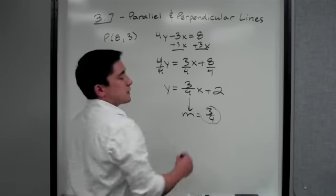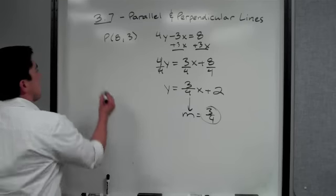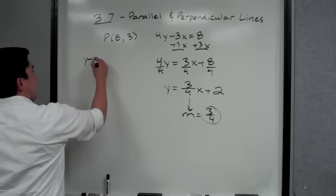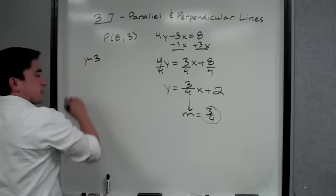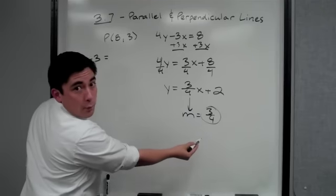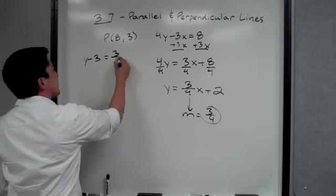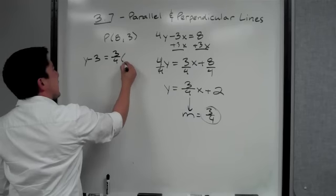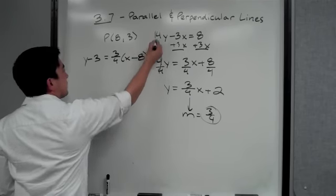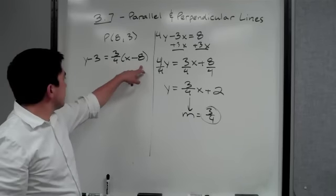We are going to use this slope and plug into point-slope form. So we have y minus y₁, which is y minus 3, equals our parallel slope three-fourths, times x minus our x-value, x minus 8.